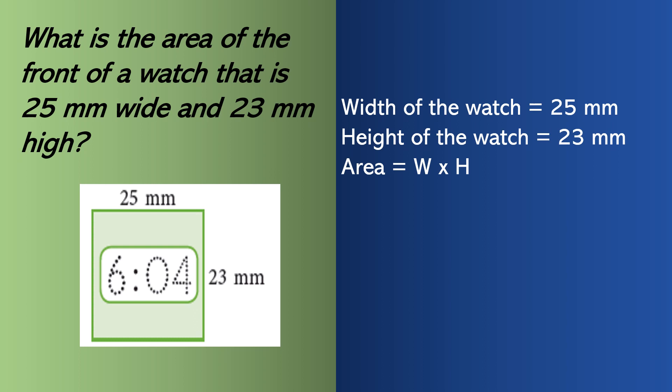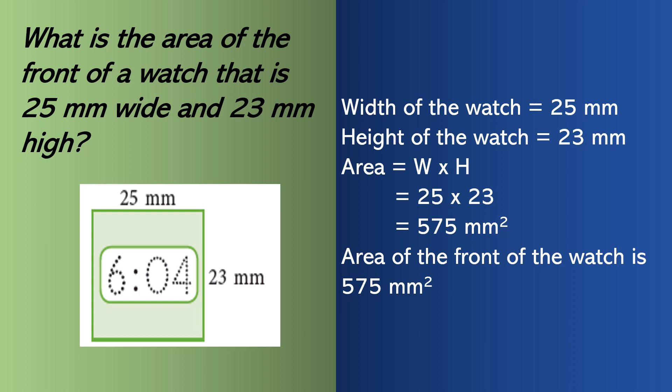Here we can write area equals width into height, which is the same. So 25 into 23. Always remember the unit will be millimeter square, because the unit of area is square millimeter or millimeter square. Our answer is 575 millimeter square, so the area of the front of the watch is 575 millimeter square.